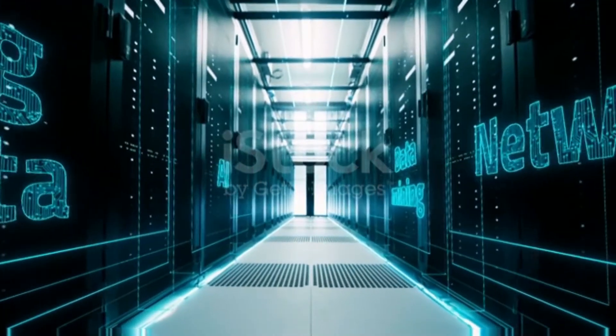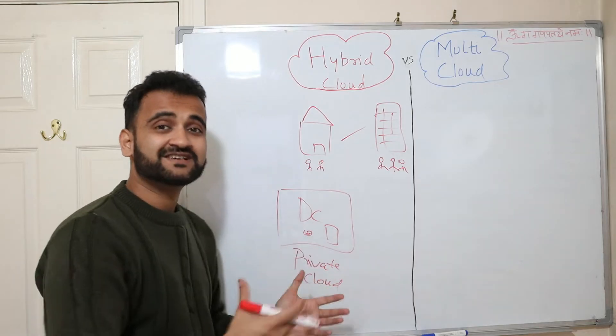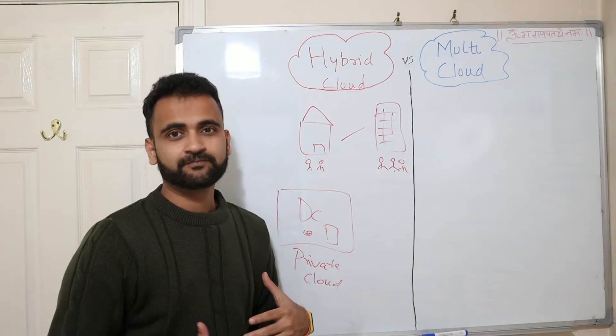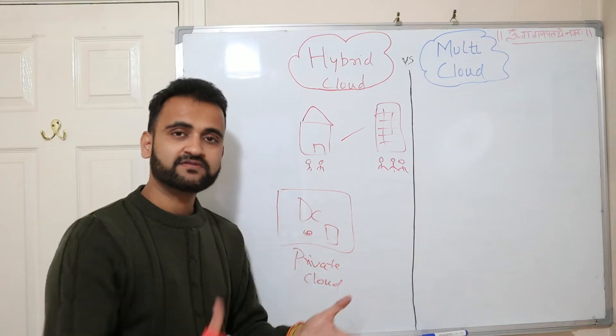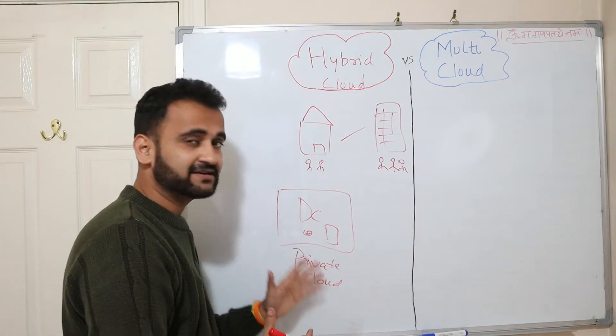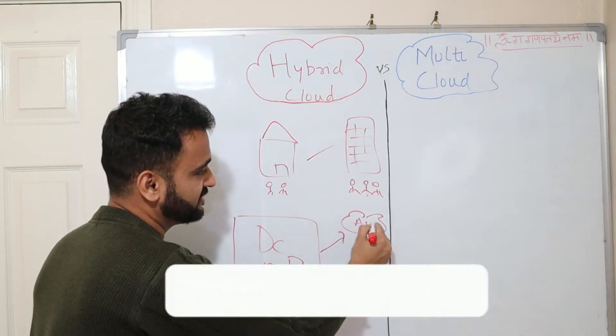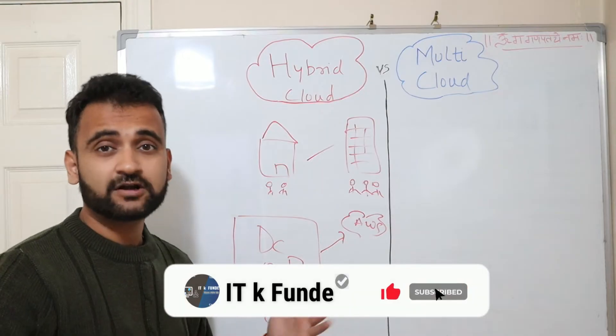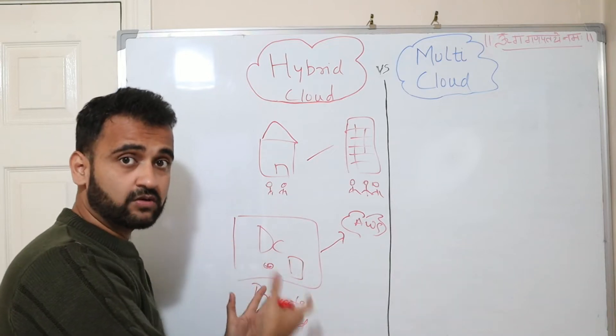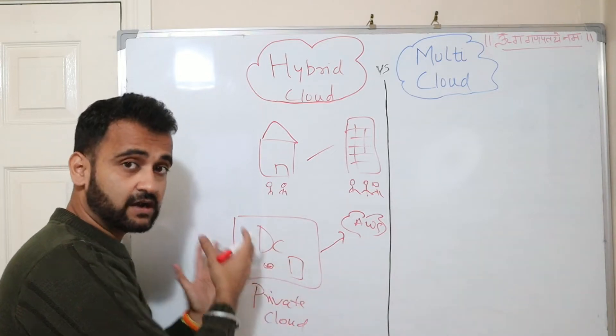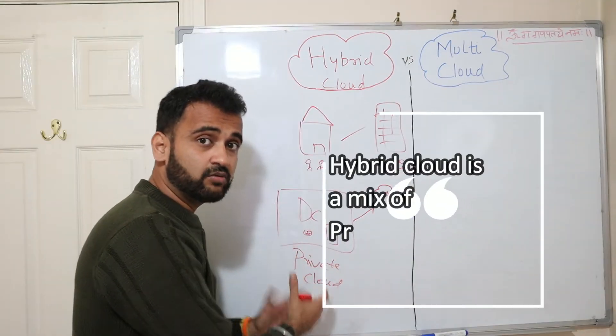But as you grow, as the operational expenditure on these resources increased, cloud came into picture. And that was the time when companies started pushing some of the IT landscapes from their on-prem data centers or private clouds to public clouds like AWS, Google, Amazon, Azure—all these kind of public clouds they started migrating. But at the same time, they do have their own on-prem private cloud as well.